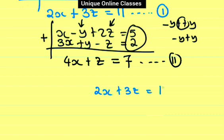Now we have two reduced equations: 2x plus 3z equals 11, and 4x plus z equals 7. We need to eliminate one variable. Let's say we eliminate z. The coefficients of z are 3 and 1, so we need to match them to eliminate z. If we need to eliminate x, the same coefficient of x should also be equal.